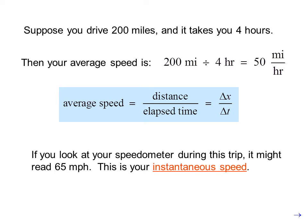If you look at your speedometer during this trip, it might read 65 miles per hour. This is your instantaneous speed. We know instantaneous speed differs from average speed — for this trip, you weren't going 50 miles an hour starting at your driveway or through the McDonald's drive-thru when you made a pit stop.